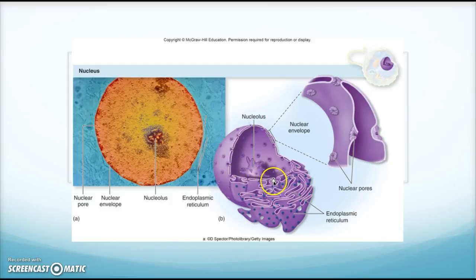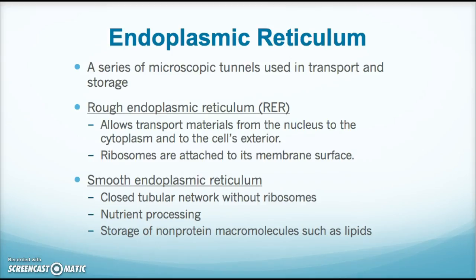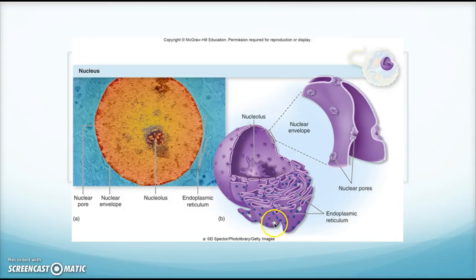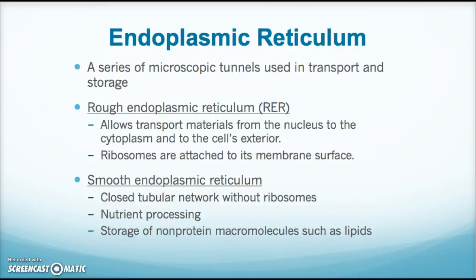Attached to the nuclear envelope, and really an extension of it, is what becomes the endoplasmic reticulum. It's a series of microscopic tunnels used in transport and storage. The rough endoplasmic reticulum has ribosomes attached to its membrane surface — you can see those blue dots — and it allows transport of materials from the nucleus to the cytoplasm and then to the cell's exterior.